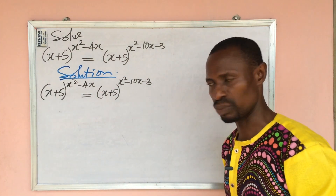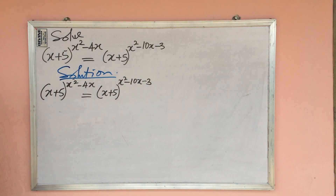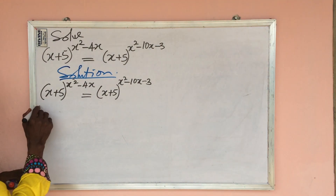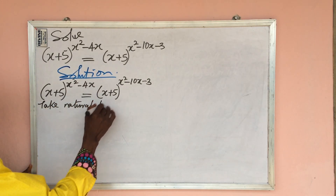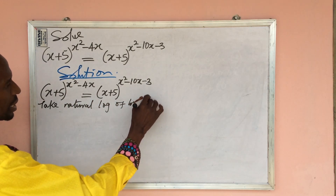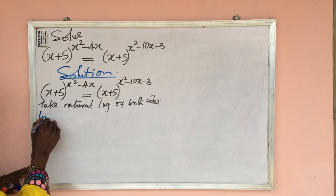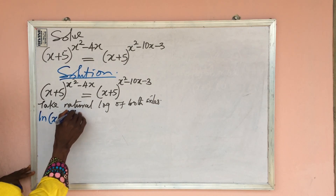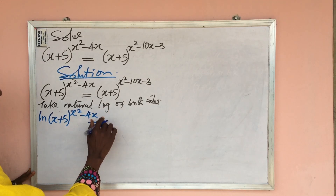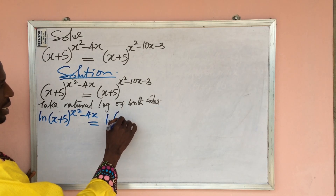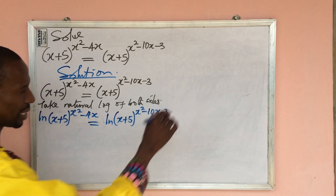So the best thing to do here is to take the natural log of both sides, using ln. So we take the natural log of both sides. This will give us: ln(x + 5) to the power of (x² - 4x) equals ln(x + 5) to the power of (x² - 10x - 3).